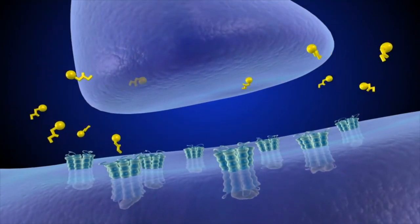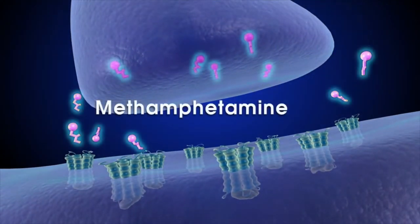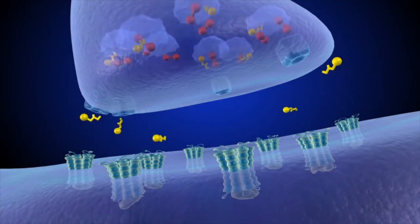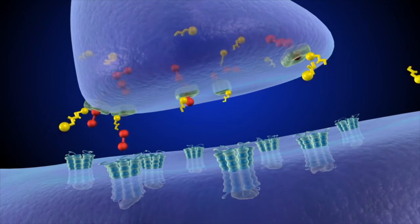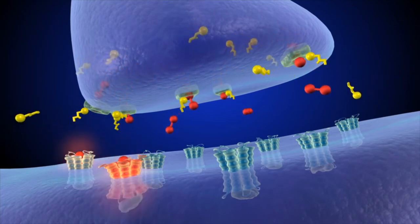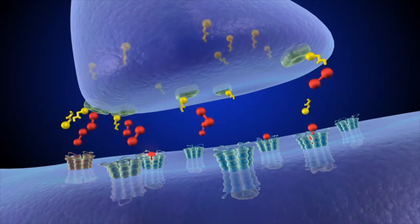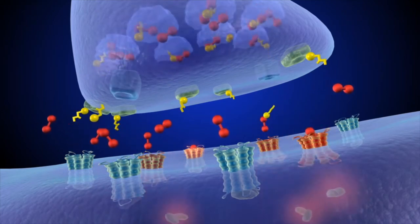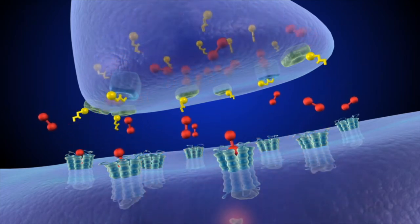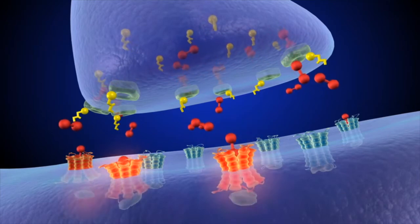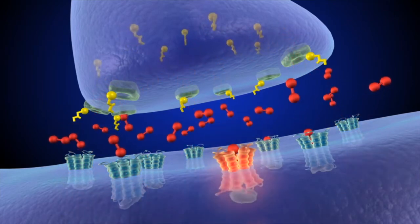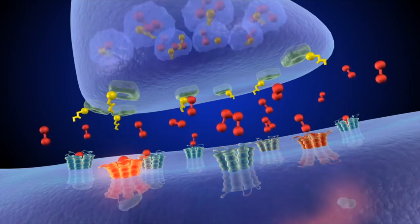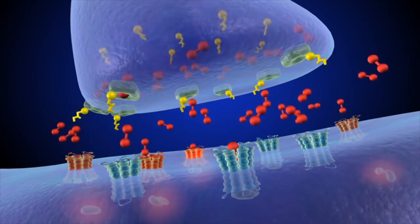When someone first uses methamphetamine, the drug quickly enters the brain. At low doses, meth blocks the re-entry of dopamine into the presynaptic cell, just like cocaine does. But unlike cocaine, higher doses of meth can increase the release of dopamine from the cell, leading to much, much more dopamine in the synapse, where it becomes trapped because meth prevents the transporters from removing it.